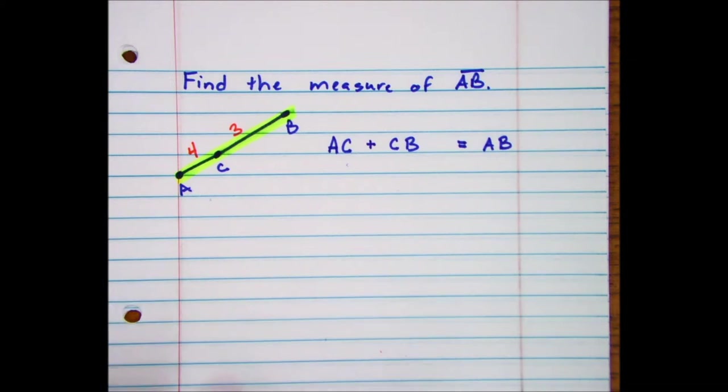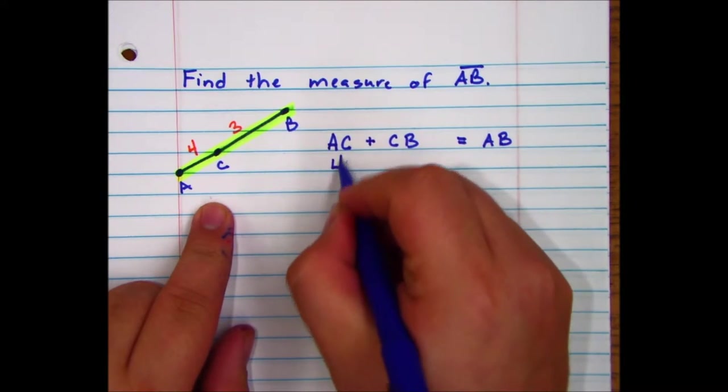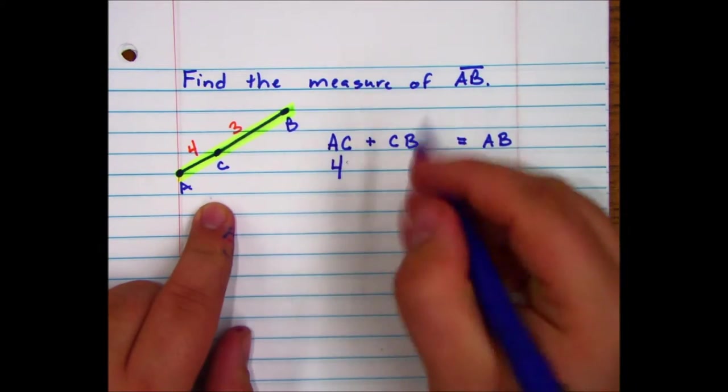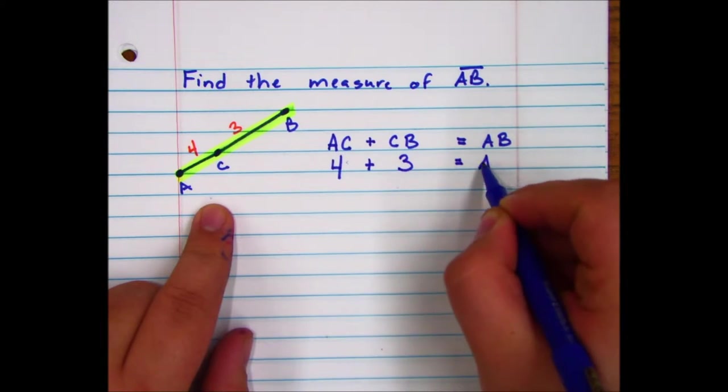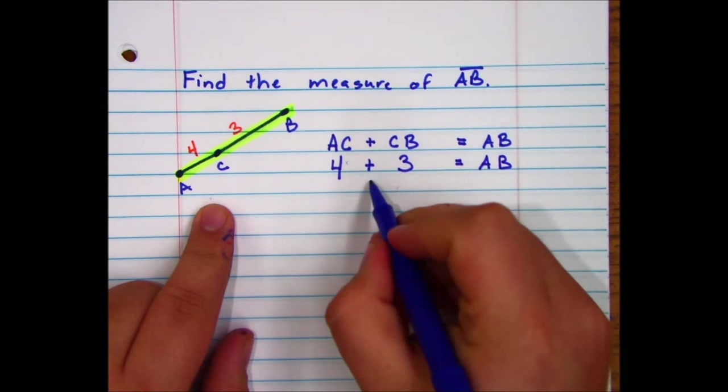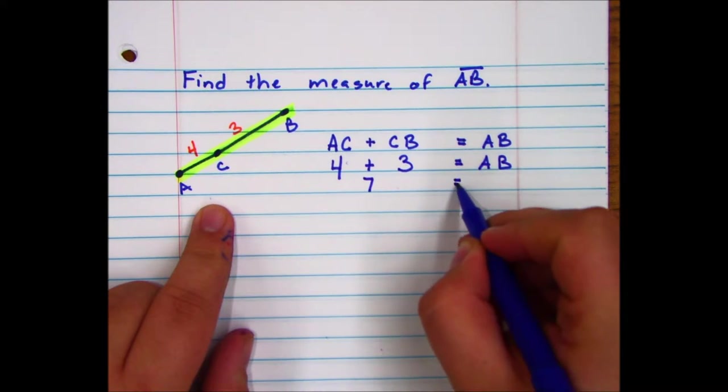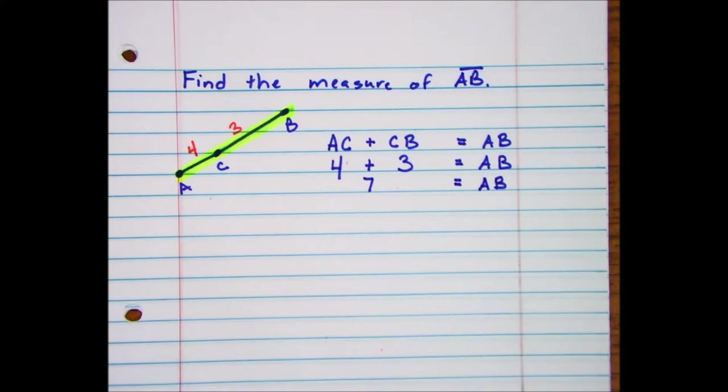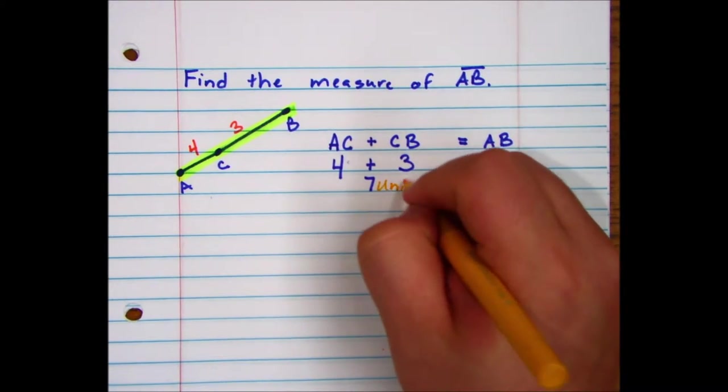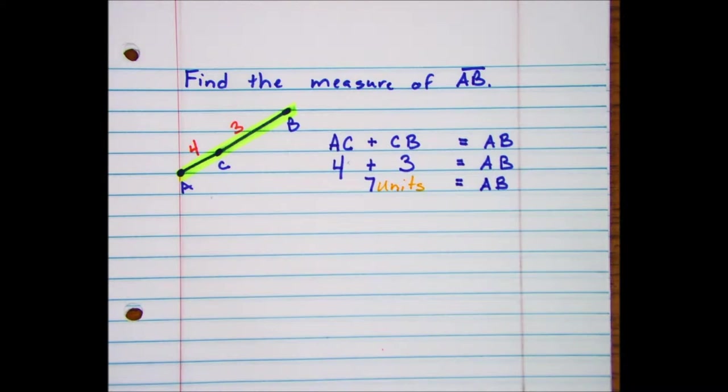By looking at our problem, AC is 4, CB is 3, and we find that AB is equal to 7. Seven what? Seven units because it is a measure of something. We don't technically know, we're not given that information, but we know it's some unit of measurement.